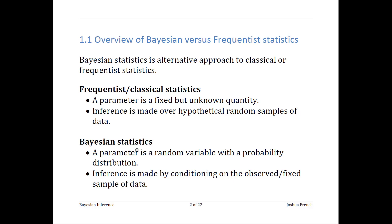On the other hand, in Bayesian statistics, a parameter is a random variable with some sort of probability distribution. The way that we make inference in Bayesian statistics is by conditioning on our observed or fixed sample of data.